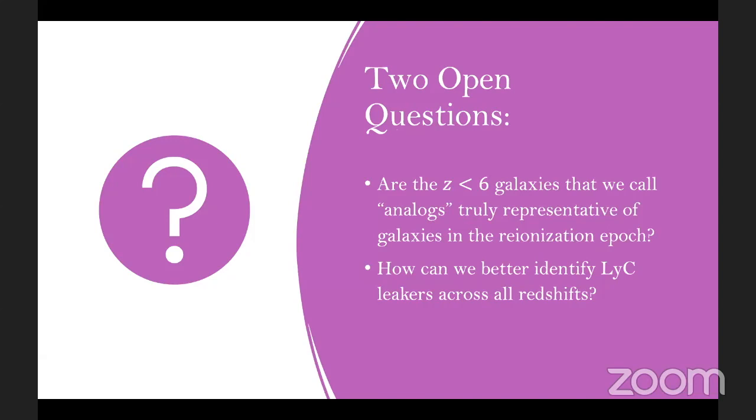There's a subset of these analogs which are the Lyman Continuum leakers. And as you heard earlier this morning, we actually only know very few of these. Many of them tend to have escape fractions lower than what you would expect you would need to actually reionize the universe. So the second question we'd like to address is how can we better identify these Lyman Continuum leakers across all redshifts?